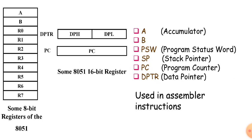R0 to R7 are registers inside the internal RAM of the 8051. All R0 to R7 registers are 8-bit registers and are used to store data temporarily. Basically, there are 4 sets of registers in the internal RAM of the 8051, divided into 4 banks.